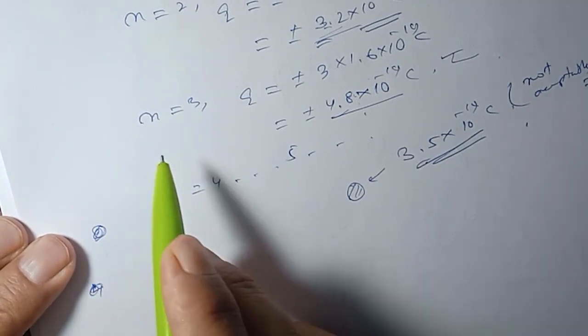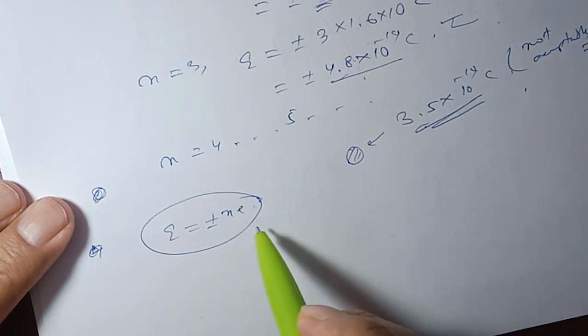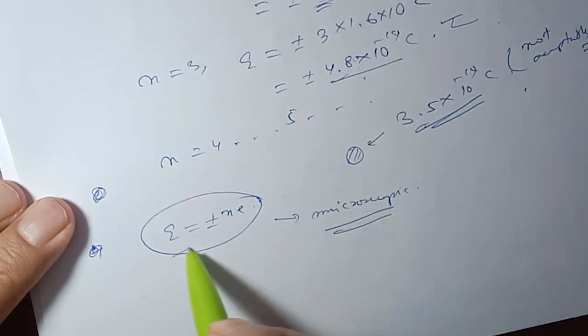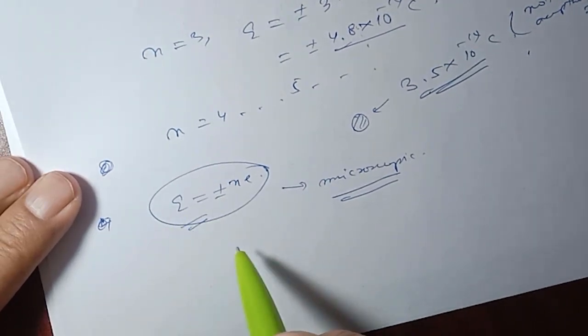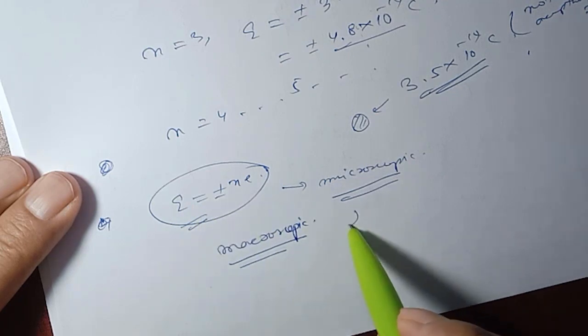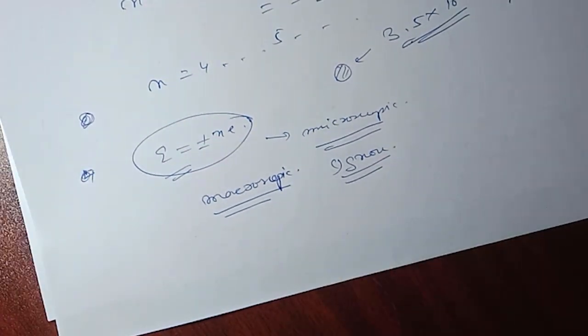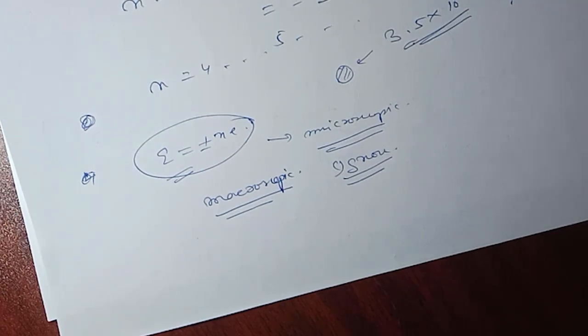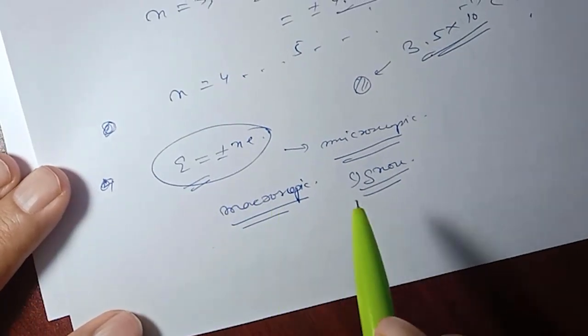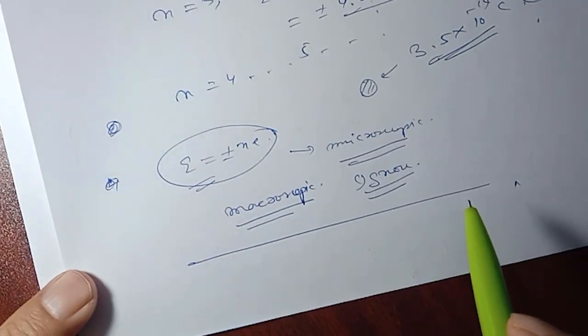This rule Q equals plus minus ne is applicable only when the charge is in the microscopic level. But we ignore it when we talk about macroscopic charges. In macroscopic situations, we don't need to worry about this quantization condition as strictly. This is an important point to remember.